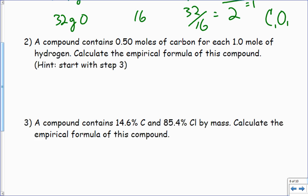Now we're getting a little trickier. It says a compound contains 0.5 moles of carbon for each one mole of hydrogen. Calculate the empirical formula of this compound, hint start with number three. That gives me the ratio 0.5 to 1. Basically I have half. I could do 1 over 0.5 equals 2, so it's a 1 to 2 ratio or a 2 to 1 ratio. For every half a mole of this I have a whole mole of this. So I'm going to have more hydrogen than I'm going to have carbon. For one carbon I'm going to have two hydrogens. I've got to have double the moles.